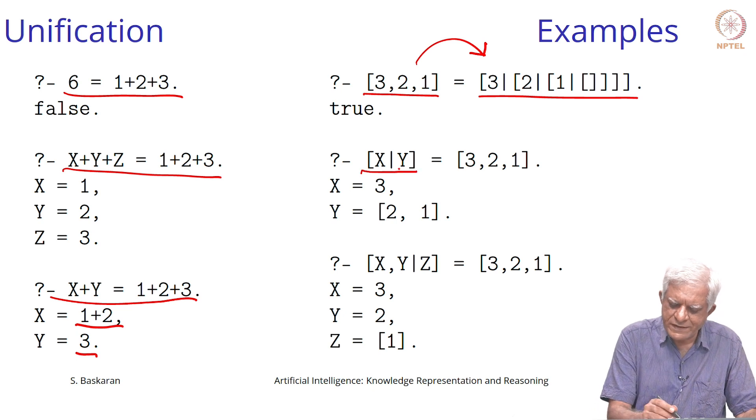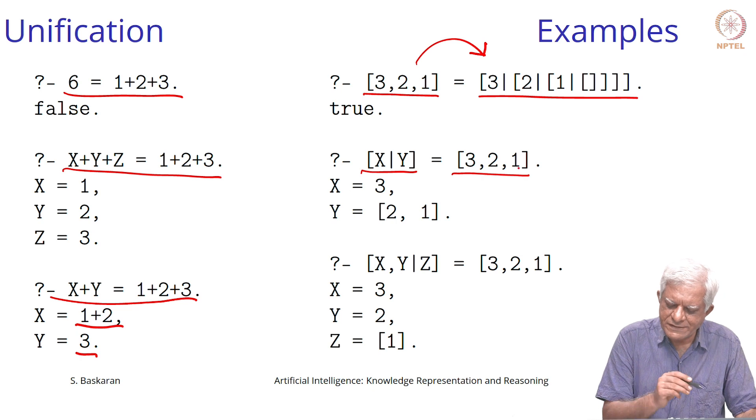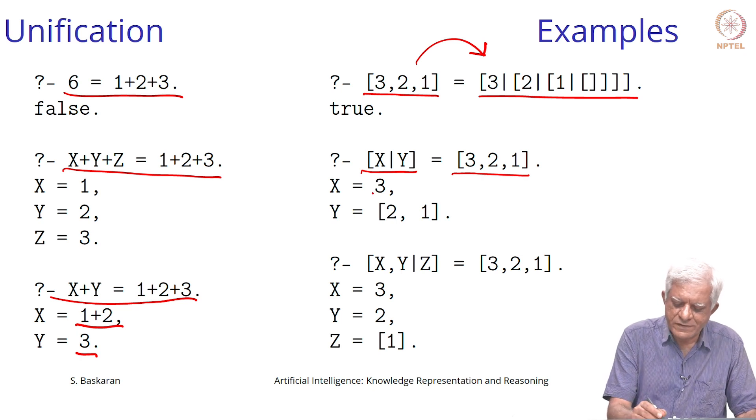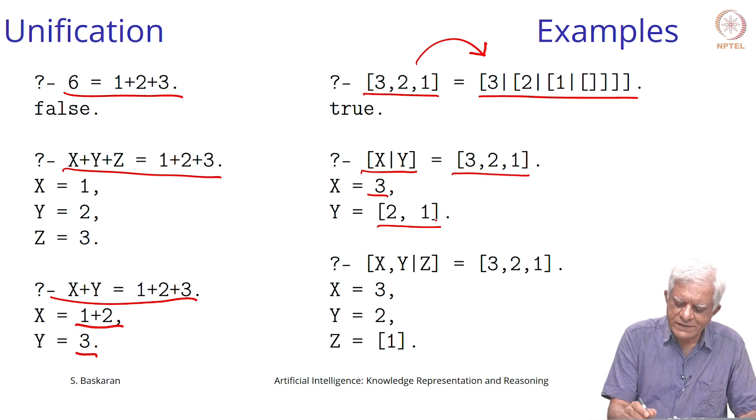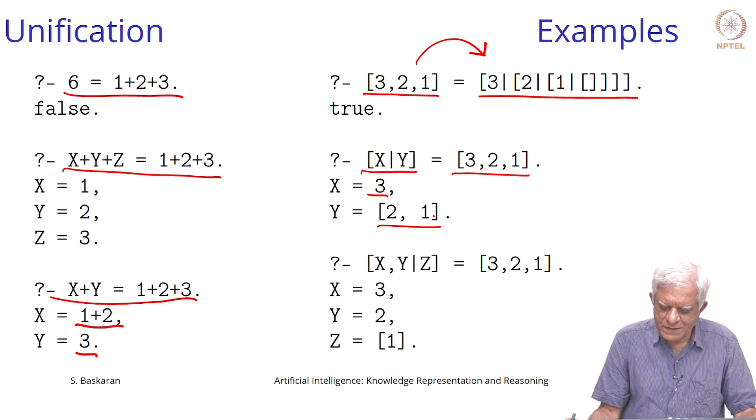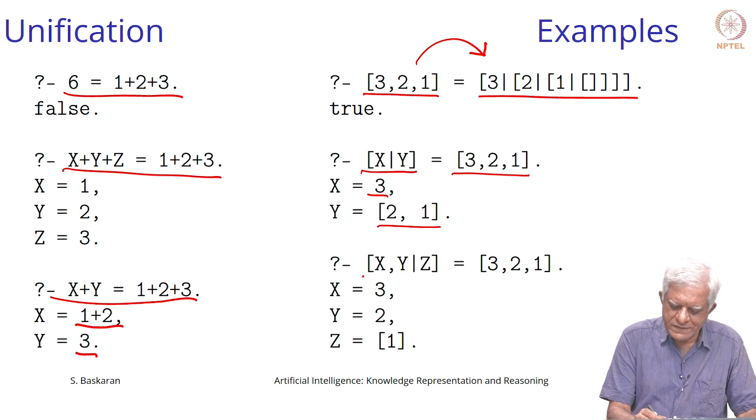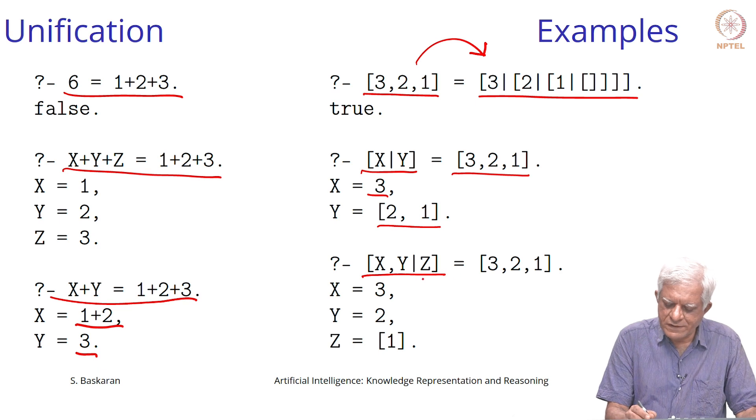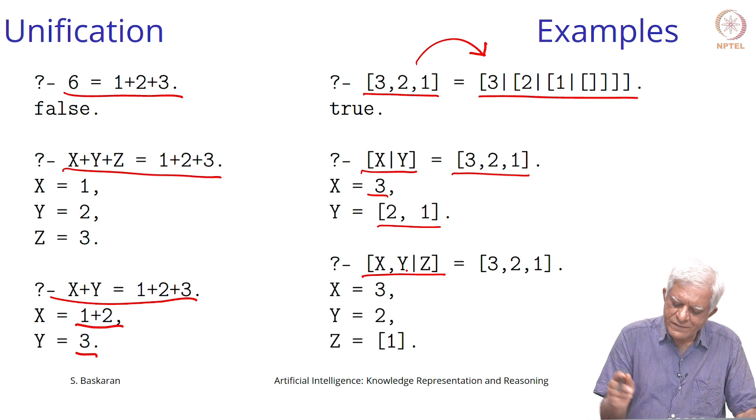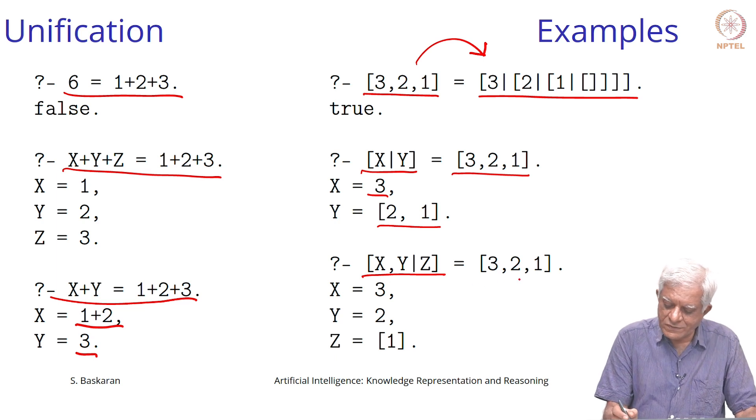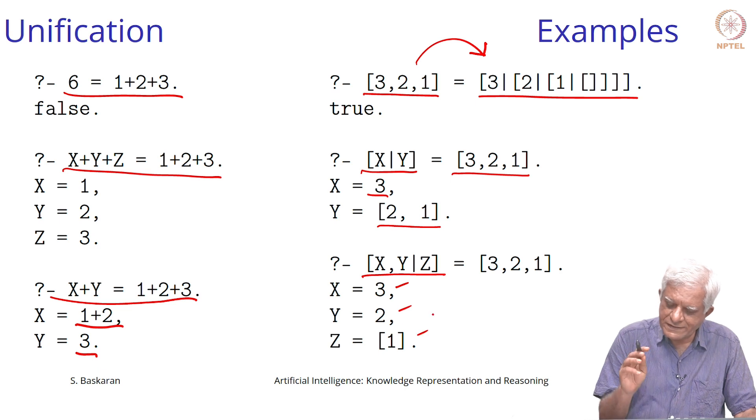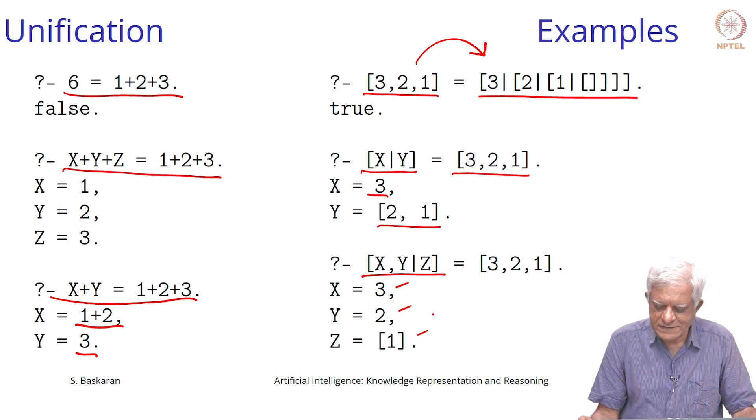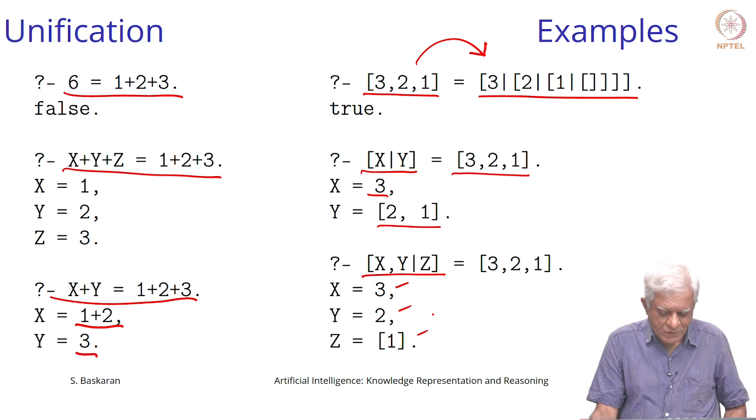Similarly, if you ask can this list be the same as this list, the answer will be yes if x equal to 3 and y is equal to list containing 2, 1. Likewise, a list containing x and y and something else which is z, can it be equal to 3, 2, 1? Answer is yes if x is 3, y is 2, and the something else is a list containing 1. Unification will do all this for you.